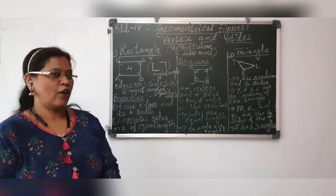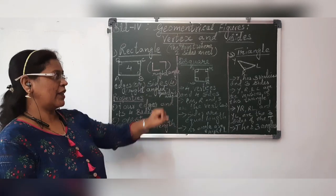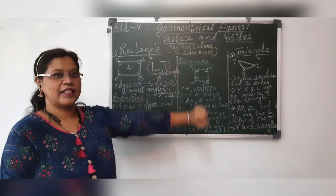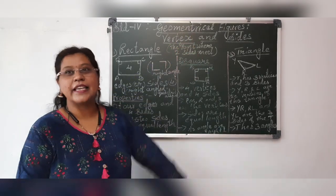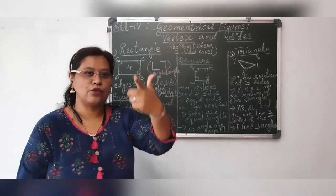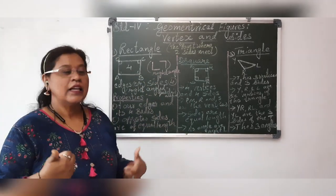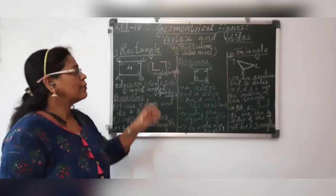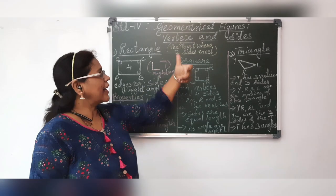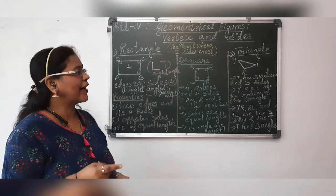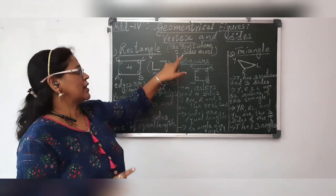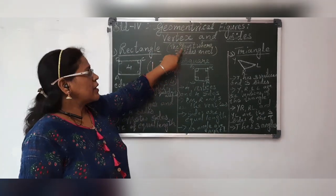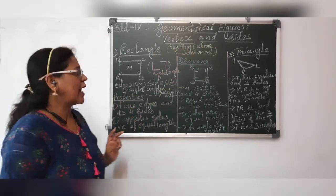Now, first of all, you have to tell me what is the meaning of vertex. V-E-R-T-E-X. I know that this term is new for you. You are listening this word first time. But in a geometrical term, vertex means the point where two sides meet. Just listen once again. Vertex means the point where two sides meet.